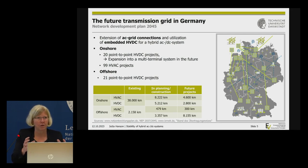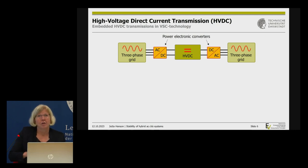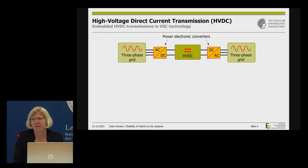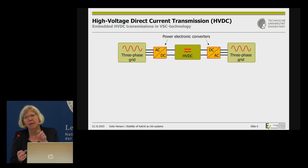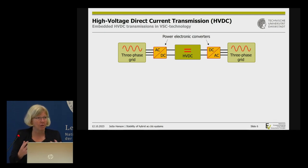HVDC works by taking our three-phase 50 Hz AC system, converting it to DC with a power electronics converter — effectively reducing frequency to zero — transmitting over a long distance, then converting back to three-phase 50 Hz at the other end. Most of the projects use VSC technology — specifically self-commutated converters — at a voltage of plus/minus 525 kV and a rating of 2 gigawatts.